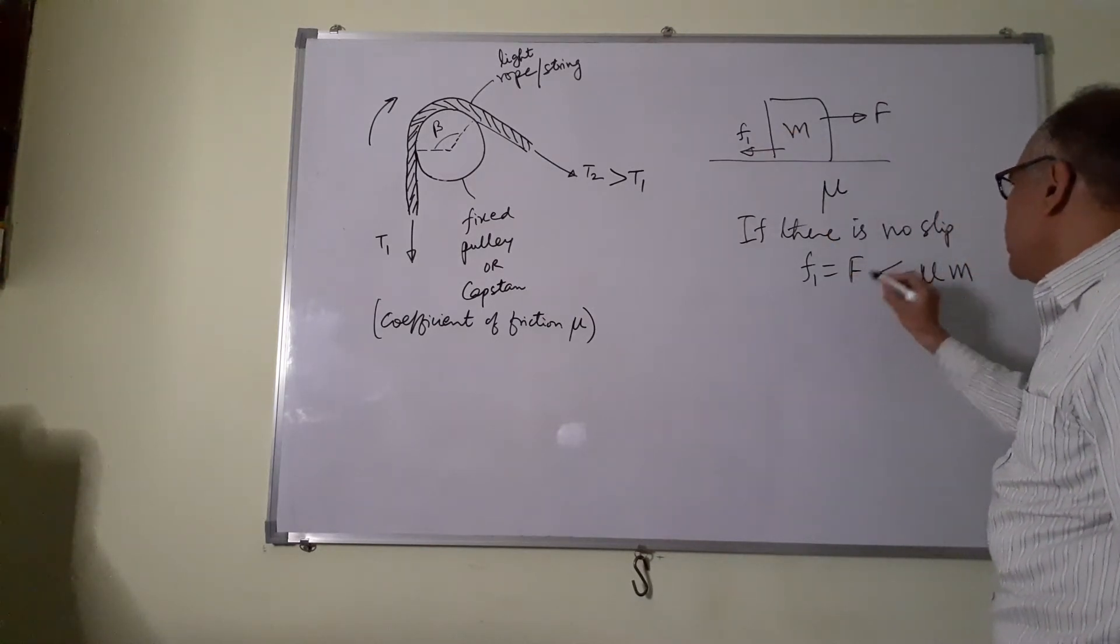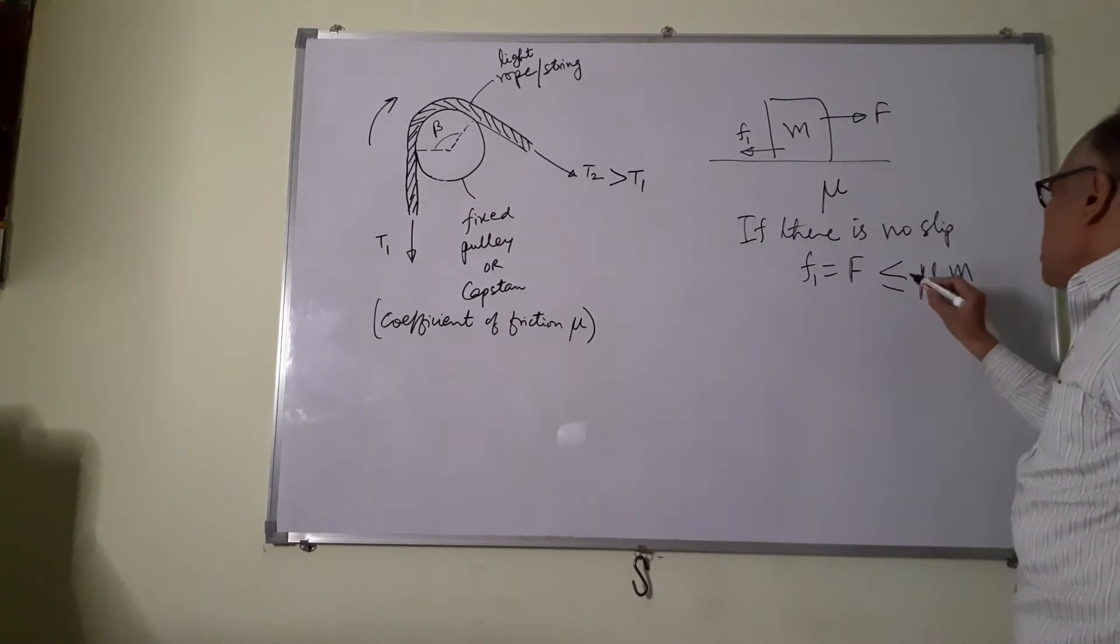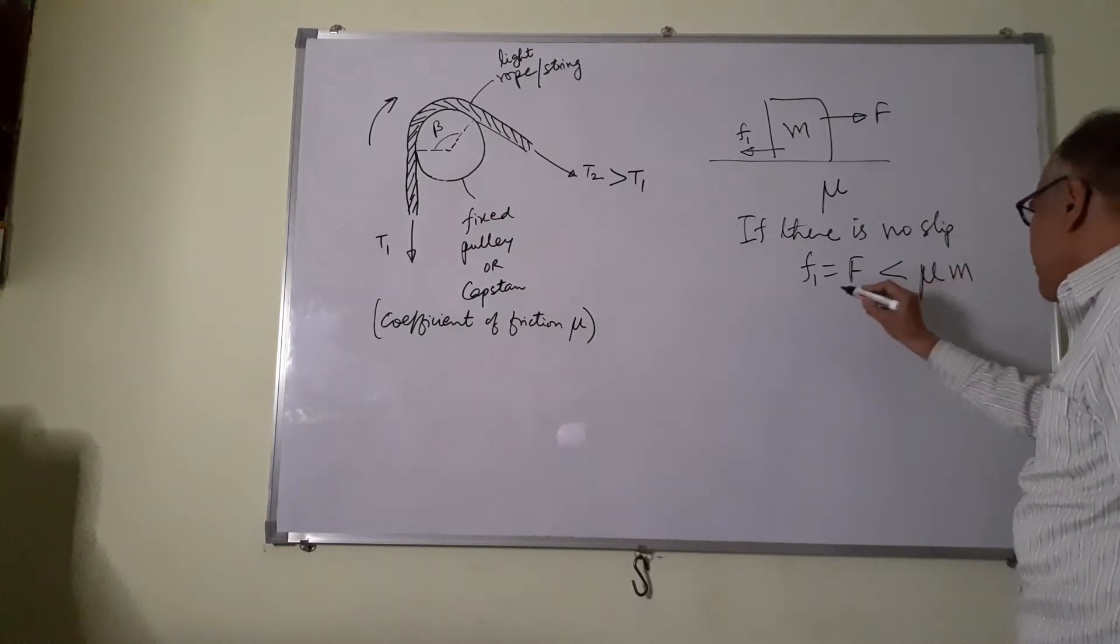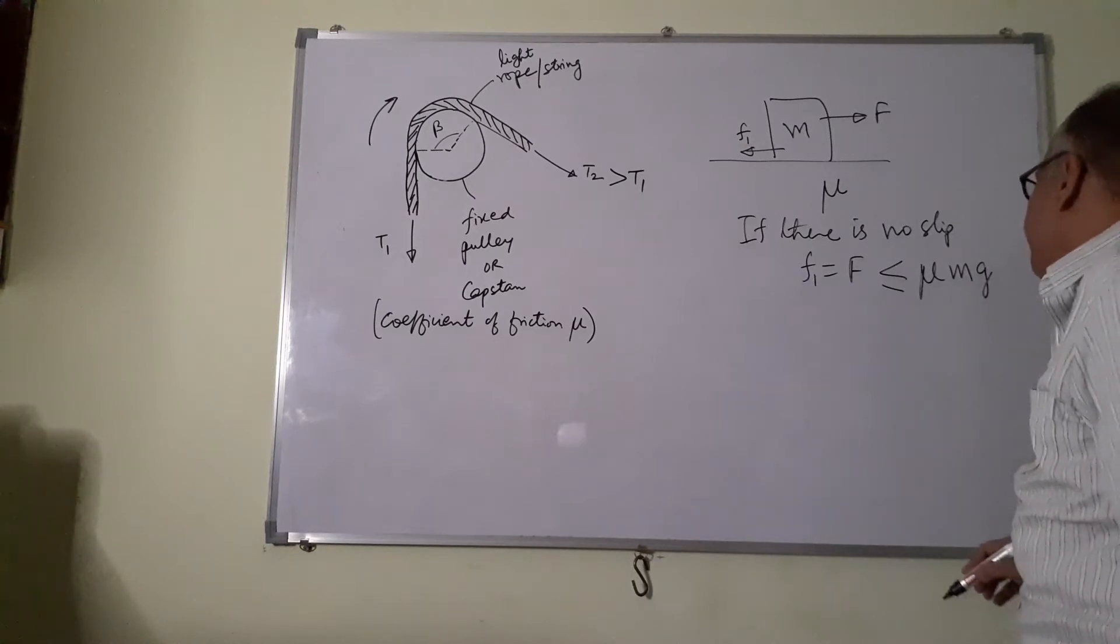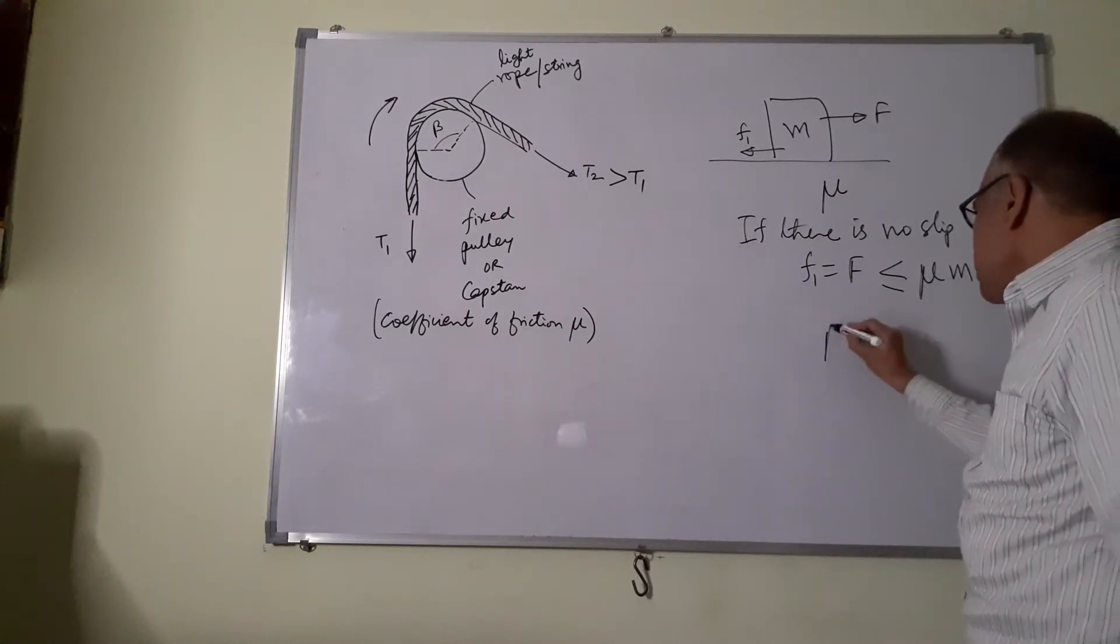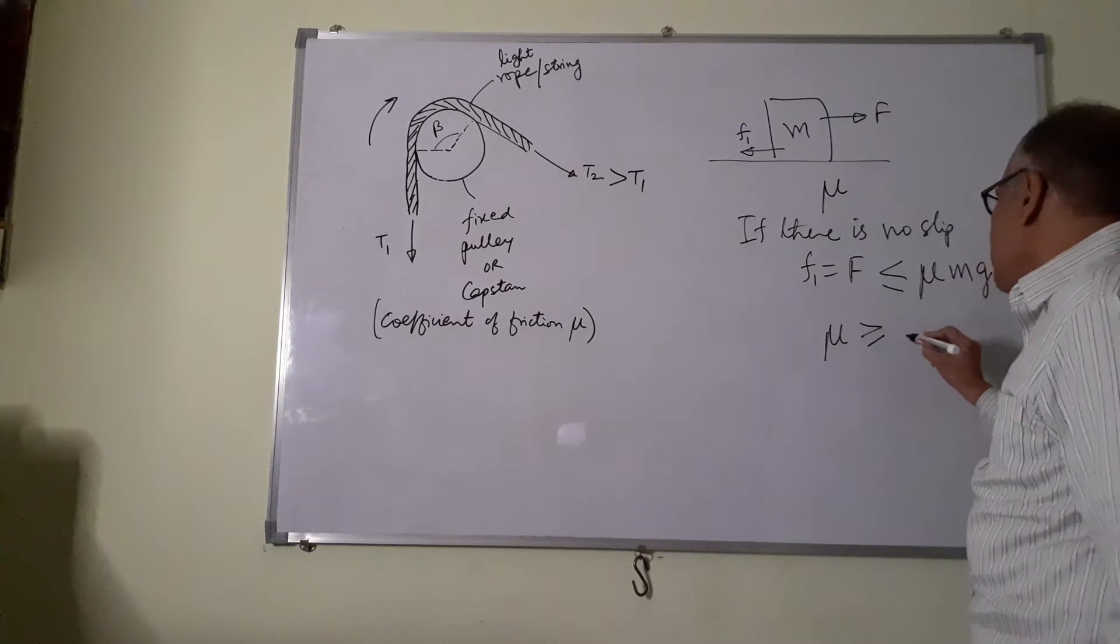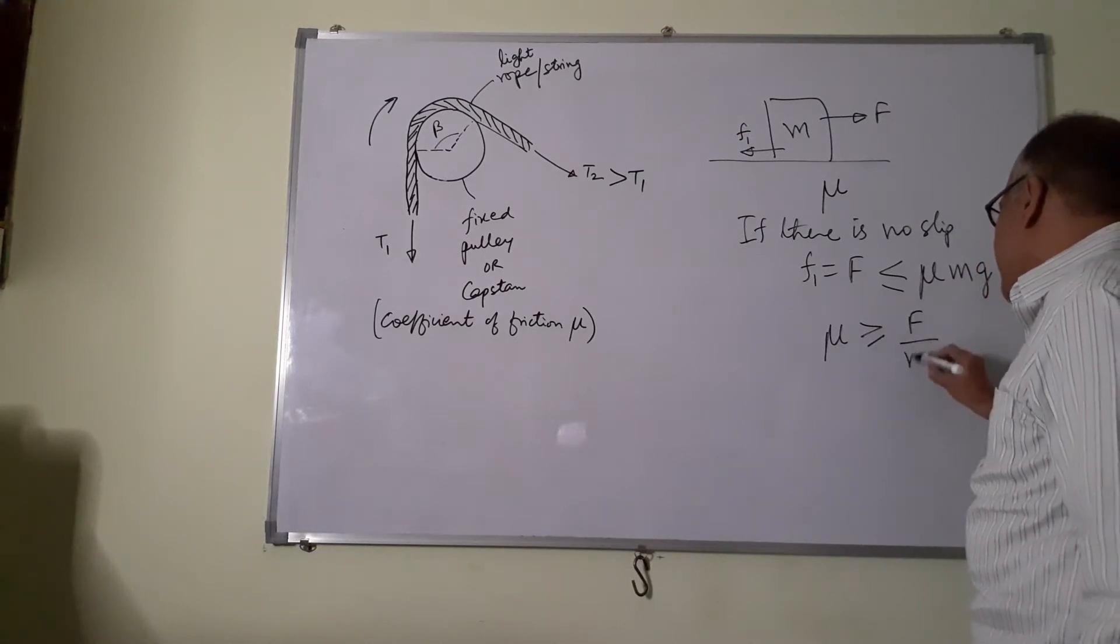F1 equal to F and F1 must be less than the limiting value, that is mu Mg. From this I can say mu must be greater than or equal to F by Mg.